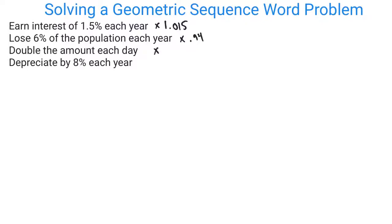Doubling means you multiply by 2 every time. That one's straightforward. Depreciating by 8% means decreasing, so that would be 0.92 that you'd be multiplying by each time.